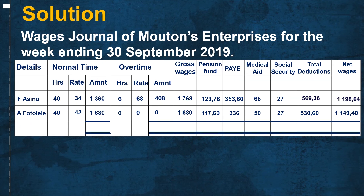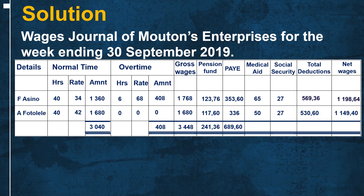When done recording the workers' information, we then total up the following columns: the normal time amount column totals to N$3,040; the overtime amount column totals to N$408; the gross wages column totals to N$3,448; the pension fund column totals to N$241.36; the PAYE column totals to N$689; the medical aid column totals to N$150; the social security column totals to N$54; the total deduction column totals to N$1,099; and the net wages column totals to N$2,348.